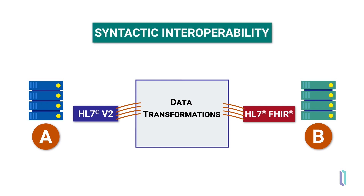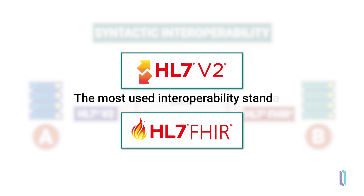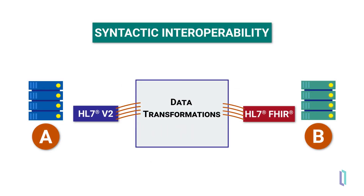That is, the two systems have a standardized way of exchanging data. The HL7v2 and FHIR standards have paved the way for syntactic interoperability, which is critical to healthcare IT infrastructure. HL7v2 is the most used interoperability standard in the world, with inter-systems technology being used to exchange over 1 billion HL7v2 messages each day. And as we enter a future focused on FHIR, compatibility with the FHIR standard is now federally mandated for healthcare IT systems in many countries. But syntactic interoperability, while critically important, is not enough on its own.